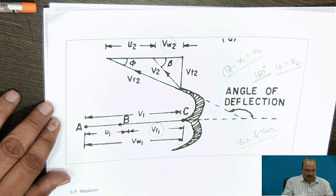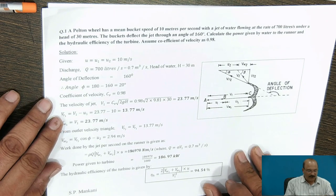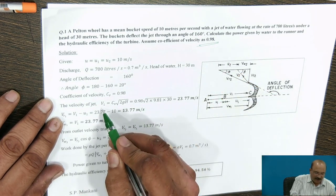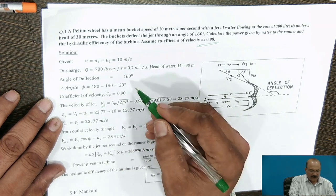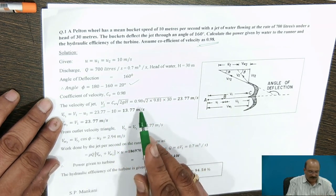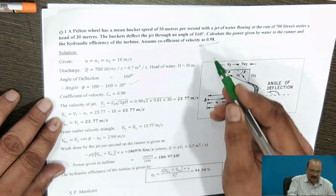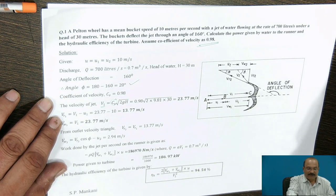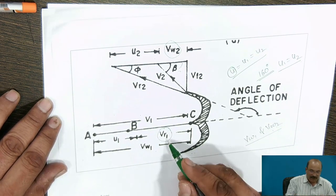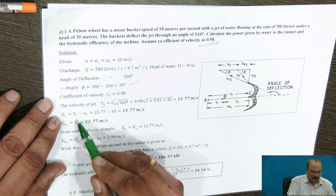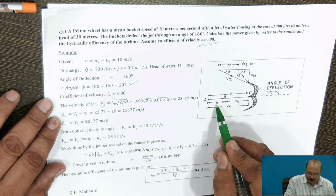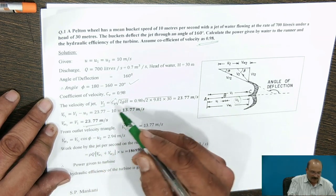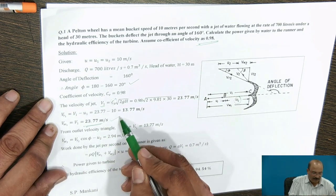By knowing VW1, VW2, V1, and U1 equals U2, we can calculate the remaining values. Since CV is given as 0.98, V1 is calculated as CV multiplied by the square root of 2GH. Based on this, VR1 can then be calculated. VR1 equals V1 minus U1. Since V1 equals VW1, we can get the value of VW1.